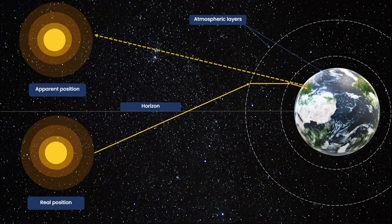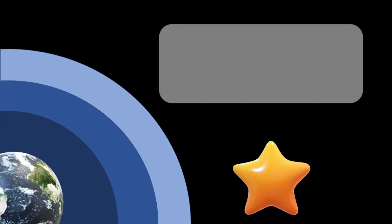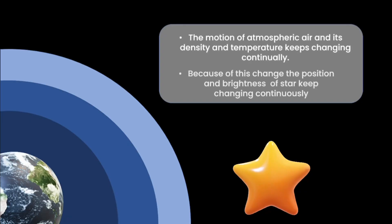This apparent position keeps changing a bit because of the changing refractive index of air. The motion of atmospheric air and its density and temperature keep changing.